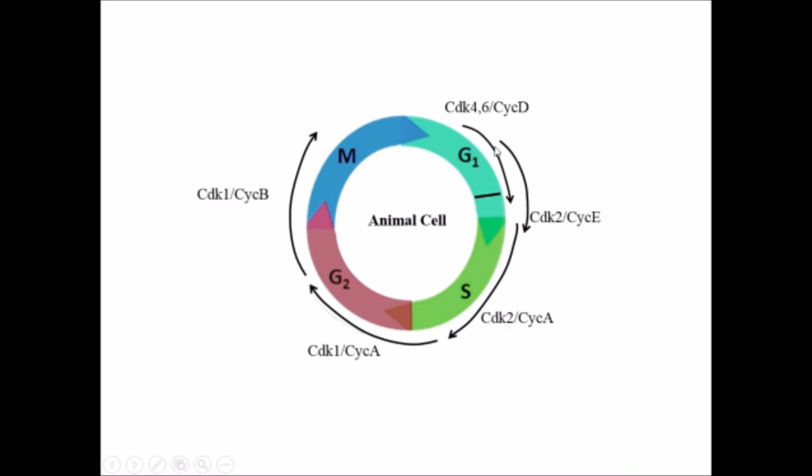In case of animals, this function is not that much simple because it requires multiple CDK and multiple cyclin proteins. From the passage from the start site of G1, there is requirement of CDK4, 6, and cyclin D. From G1 to S requires CDK2, cyclin E. S to G2 requires CDK2, cyclin A. And from S to G2, it requires CDK2, cyclin A. G2 to M requires CDK1, cyclin A. And from G2 to M requires CDK1, cyclin B.